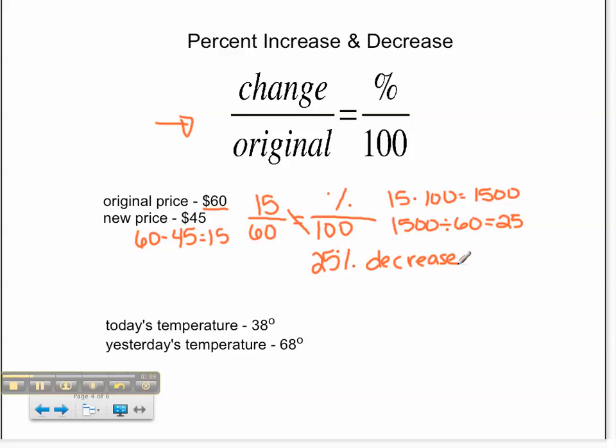Let's look at another one. We're talking about temperature. Today's temperature is a chilly 38 degrees. Yesterday was a nice 68 degrees. We are going to find the change or the difference in the temperatures. 68 minus 38 has a change of 30 degrees.